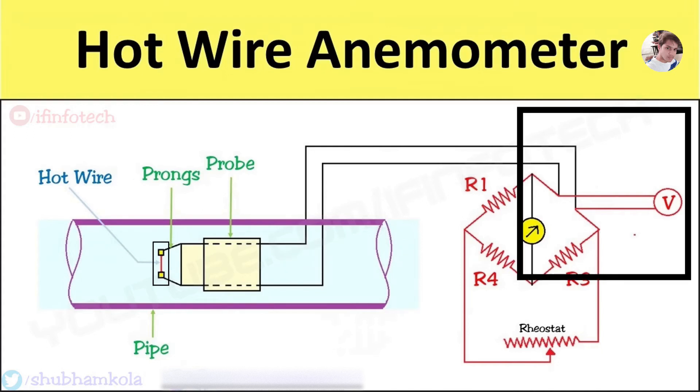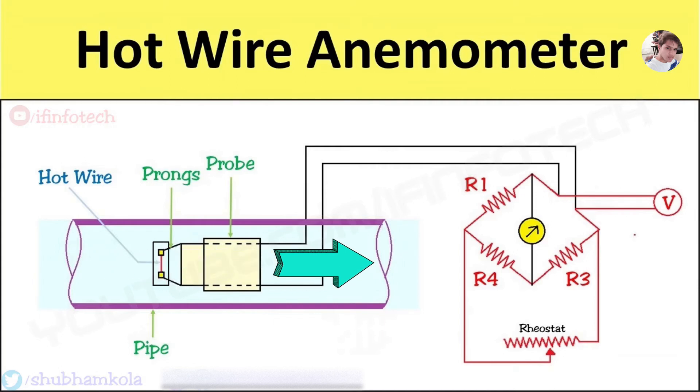The wire is heated by the passage of current. When the device is exposed to fluid flow, heat is dissipated by the wire through convection, causing a drop in temperature and consequently a change in resistance. Heat loss depends on velocity and the specific heat of fluid flow.